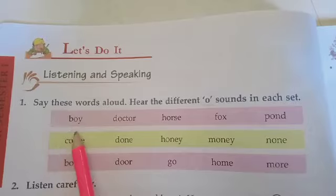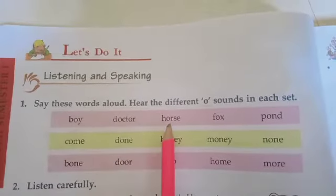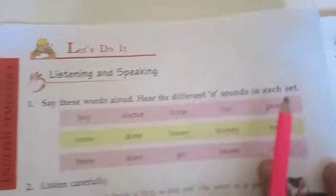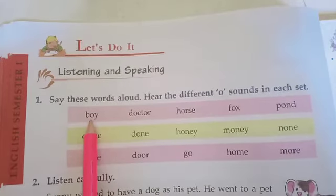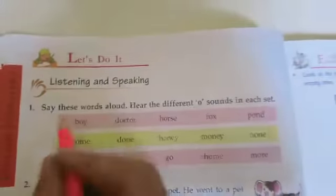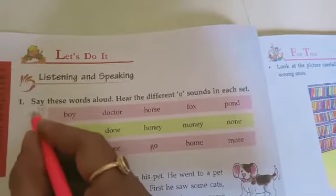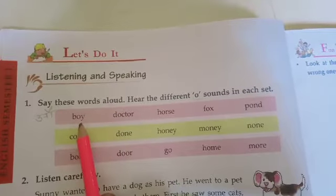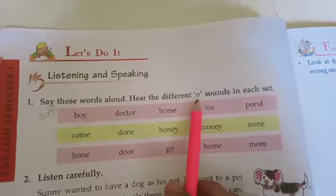Let's read the words. Here the words have O sounds. When we say 'boy,' an 'aw' sound comes. In Marathi we can write it like this — it gives an A sound. When we say 'boy' or 'doctor,' an A sound comes together with the O sound.